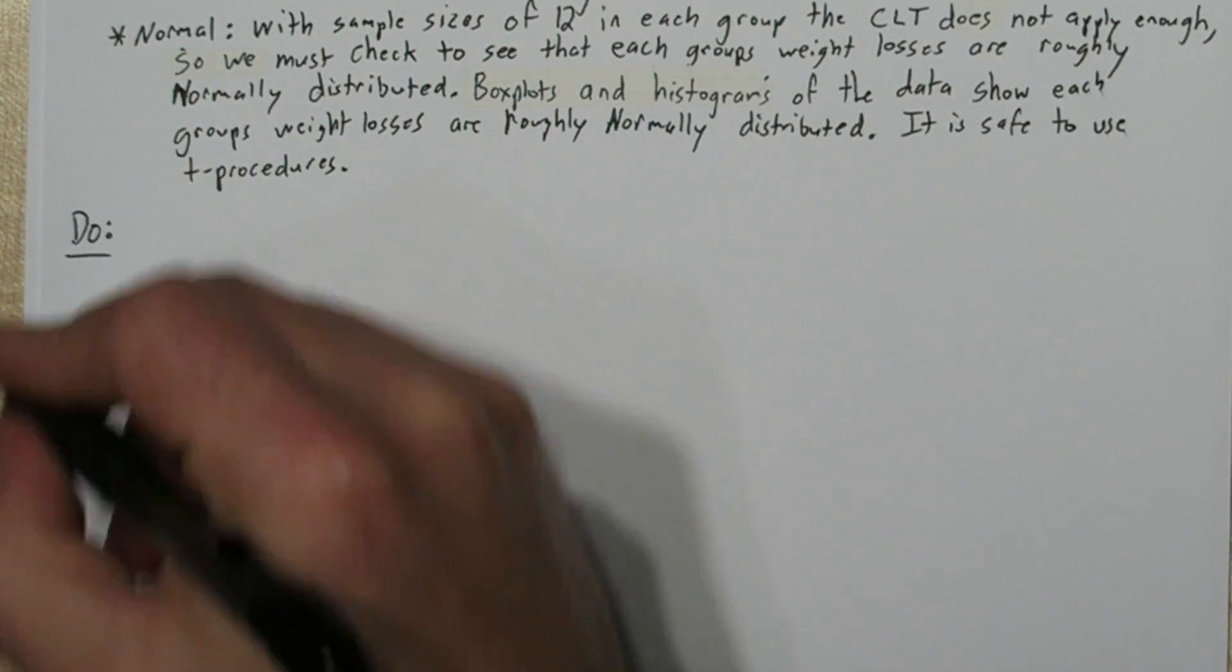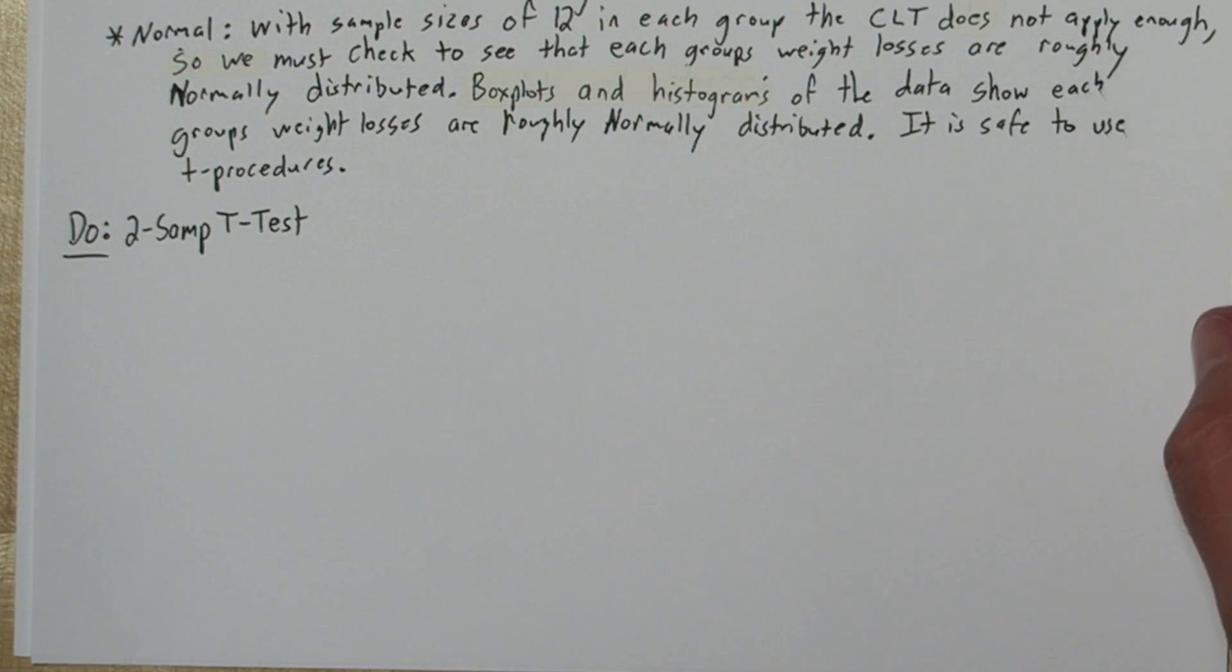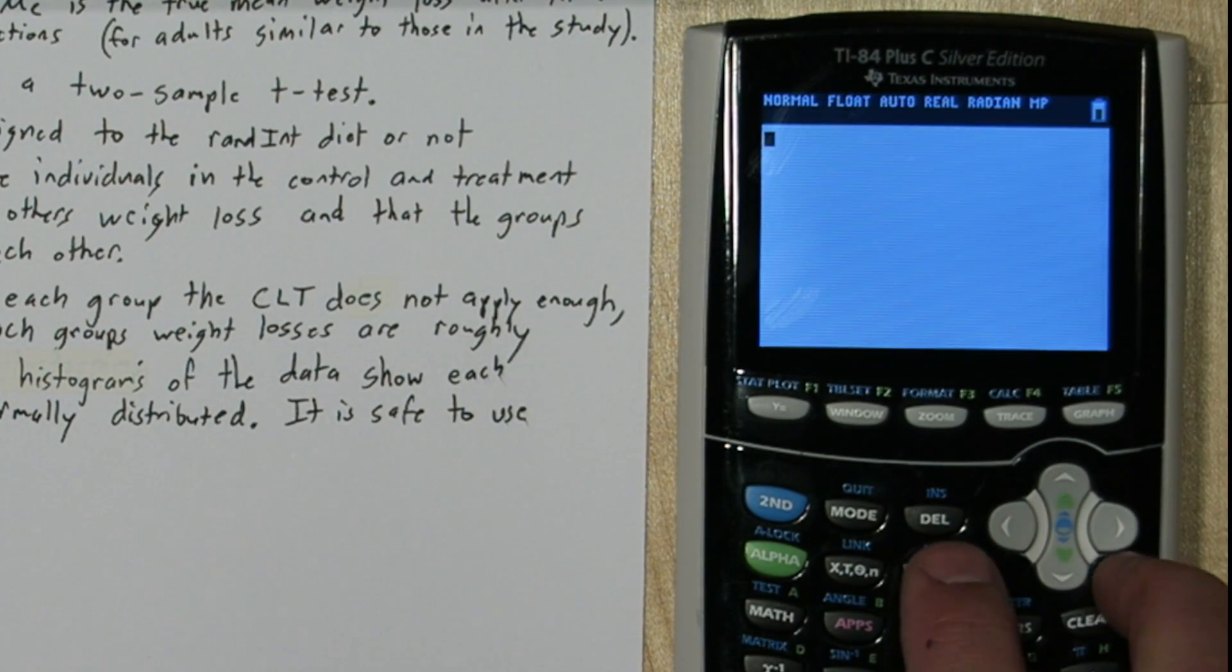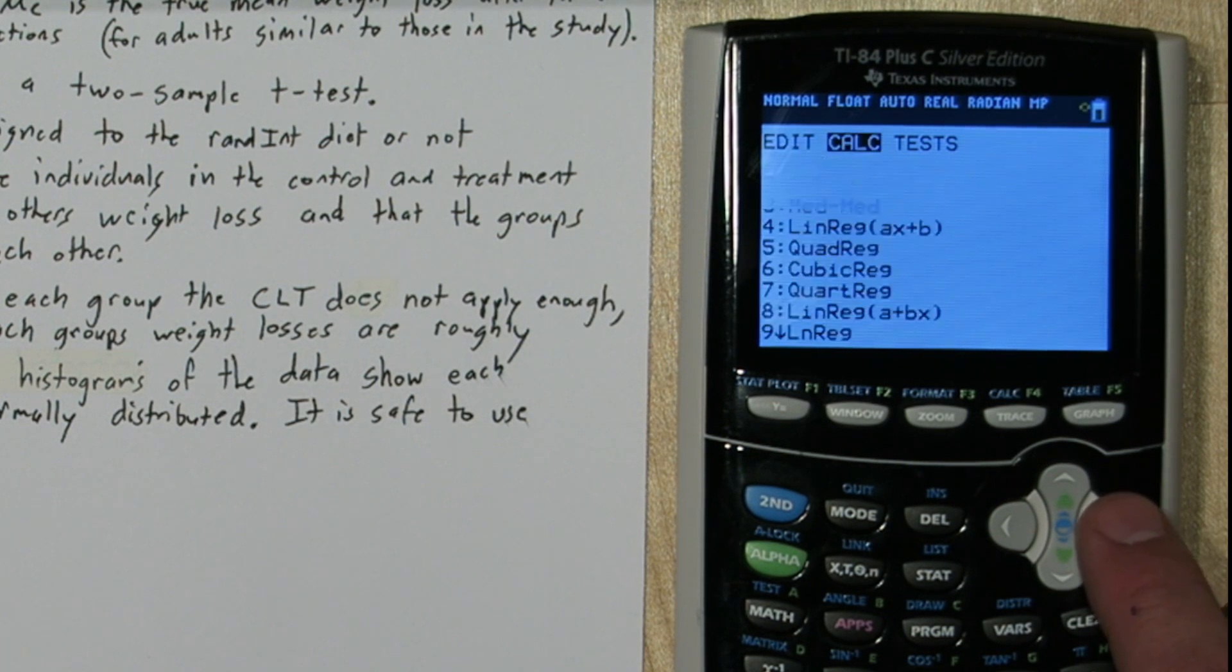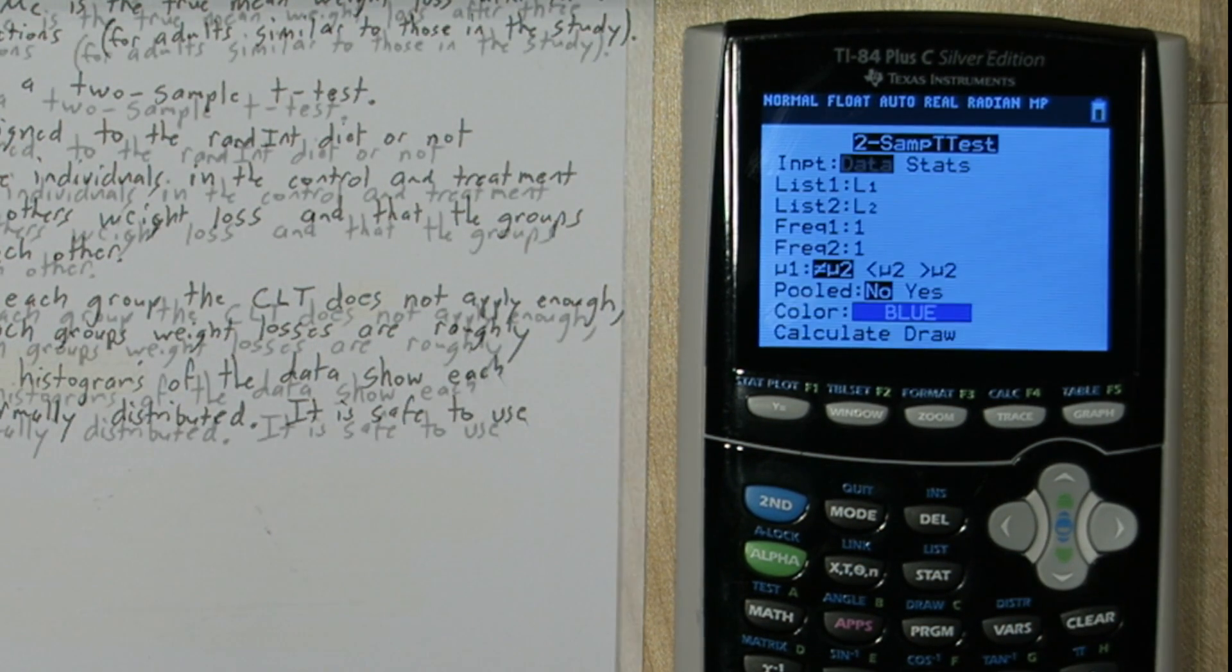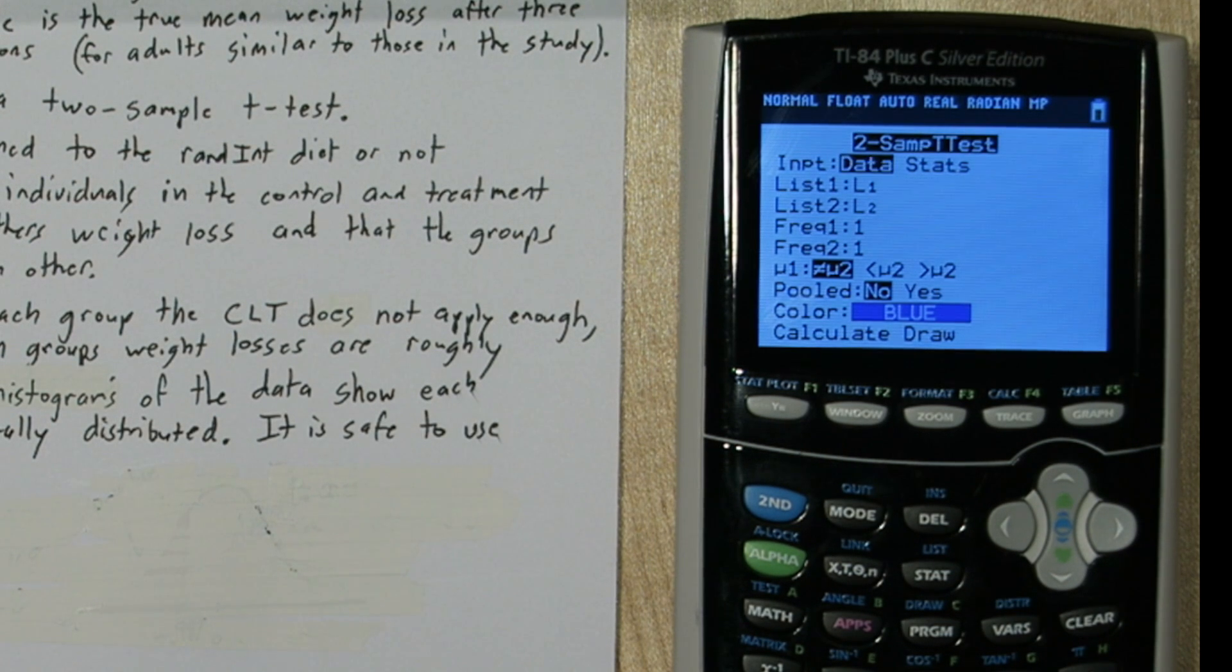We're going to do the do step on our calculator. So if you press 2nd quit to get out of your plots, and press the stat button. Go over to test and choose two-sample t-test. Now in the alternative hypothesis, we listed the treatment group first.